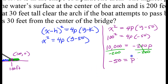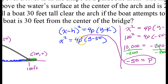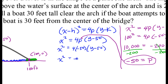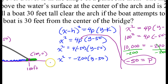I'll take this value of p and substitute it back into the equation. Substituting negative 50 for p: x squared equals 4 times negative 50 times (y minus 50), so x squared equals negative 200 times (y minus 50). That's the equation for this parabola.